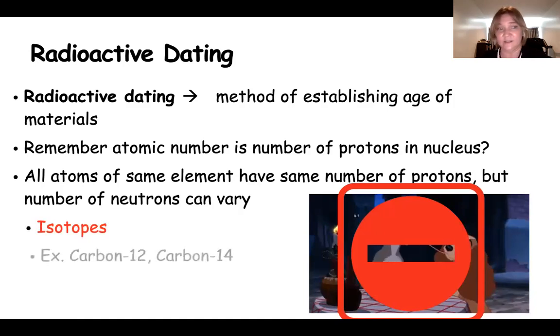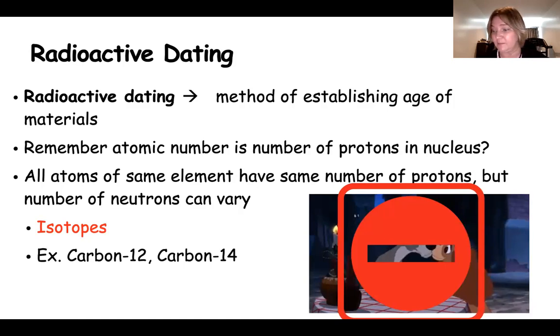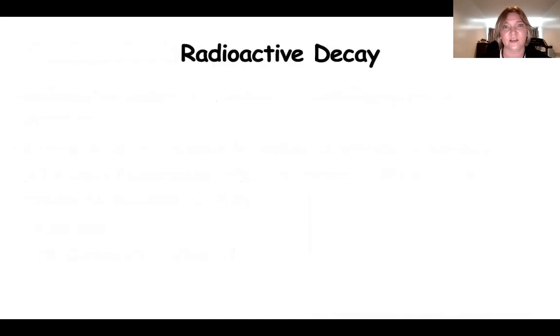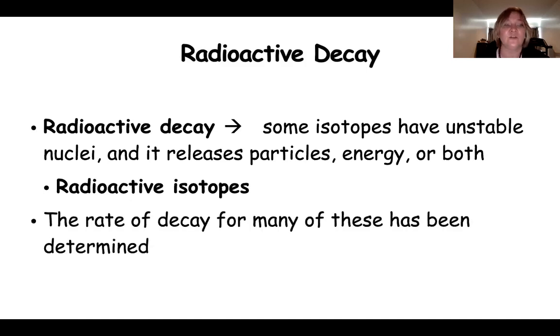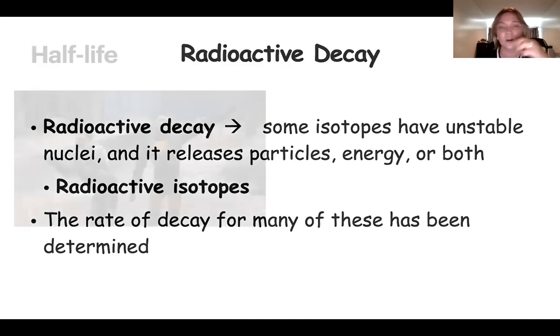Two very common radioactive isotopes that we use to date things are carbon-12 and carbon-14. This is done through radioactive decay. Some isotopes have unstable nuclei and release particles, energy, or both. These are called radioactive isotopes. The rate of decay for these different isotopes has been determined.